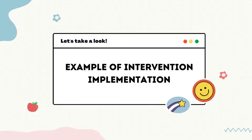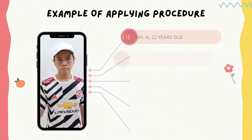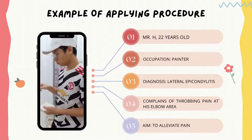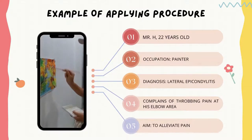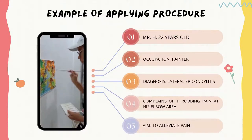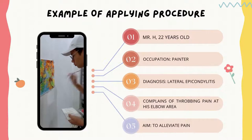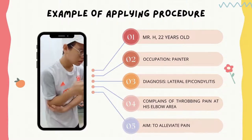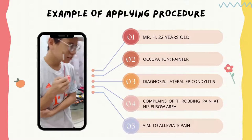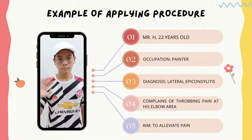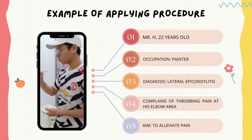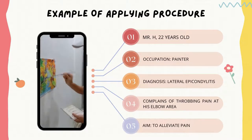Let's take a look at an example of how to implement this intervention. This is Mr. H. He works as a painter. He was diagnosed with lateral epicondylitis, which is caused by inflammation to the extensor carpi radialis brevis muscle due to repetitive use of the muscle. He complains of throbbing pain at his elbow area. Therefore, we can apply deep friction massage to Mr. H with the aim to alleviate pain.